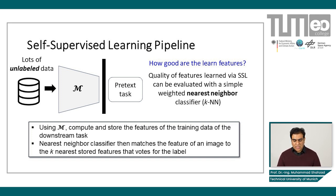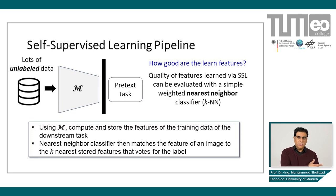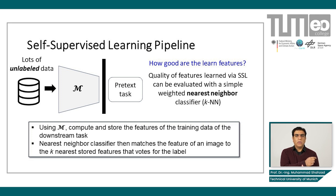A nearest neighbor classifier matches the feature of an image to the k-nearest stored features to get the label. Essentially, you pass all the training data through your learned model, get the features, and store them. Then you pass the test data — or whatever data you want to use for the downstream application — through the same model, extract the features, and simply apply k-nearest neighbors to see if the model predicts correctly for your particular application.